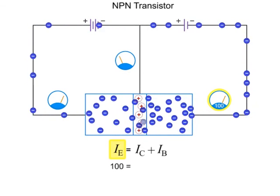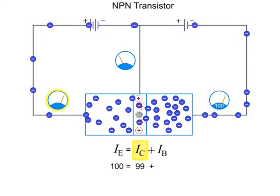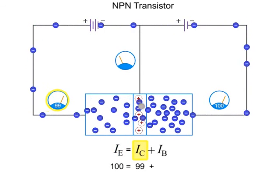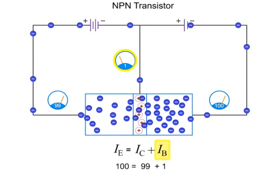So, if you have 100 milliamps at the emitter, you will have 99 milliamps at the collector and 1 milliamp at the base.